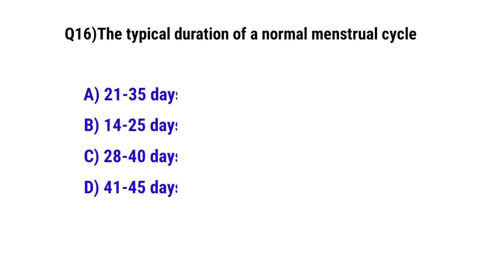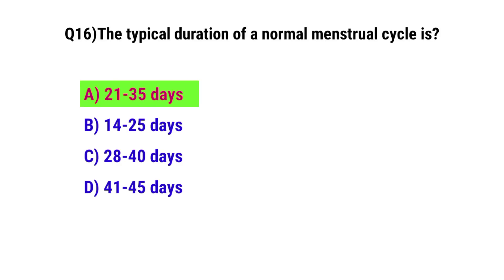Question number 15. A typical duration of a normal menstrual cycle. The correct option is A: 21 to 35 days.